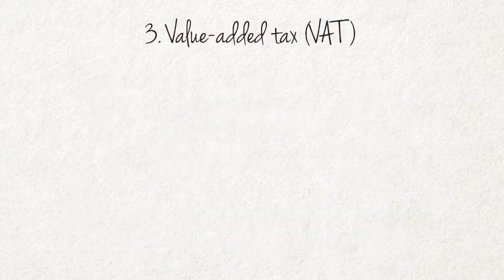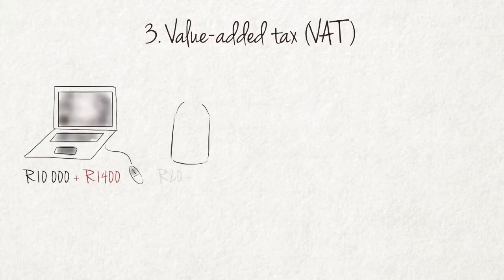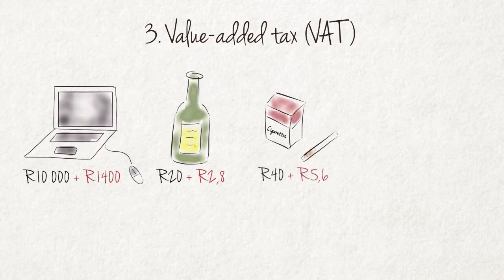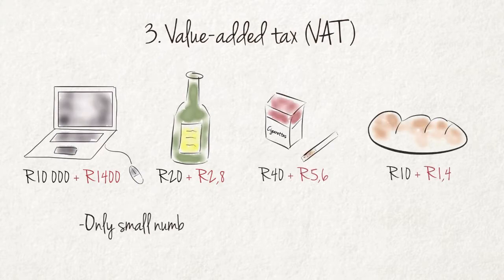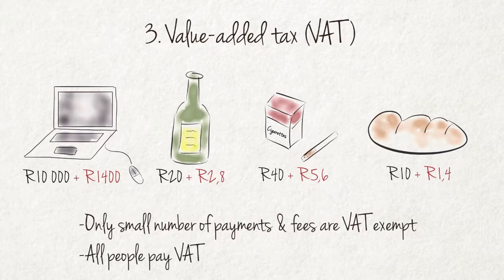Value added tax, commonly known as VAT, is the second important form of government revenue. VAT is charged on all transactions and paid on most purchases. Only a small number of payments and fees — for instance, penalties and license payments — are VAT exempt. All people, irrespective of whether they are poor or wealthy, pay VAT.